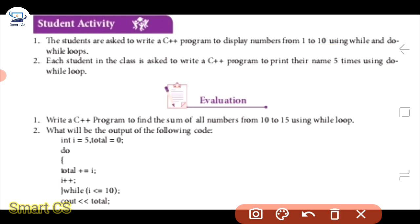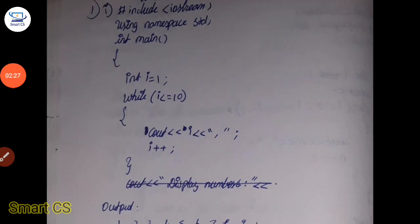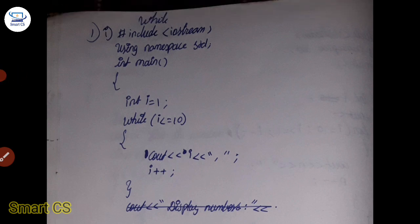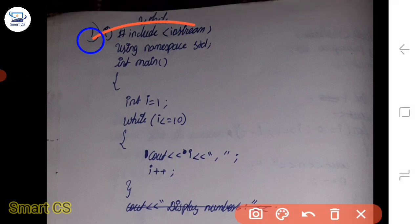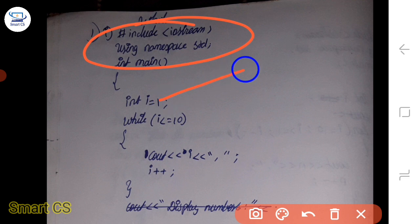Now we will have to answer the question. The first is a while loop. Let us start the first header file. We have to set the condition. If 10 is less than or equal to 10, we can explain it. We have to test the expression.